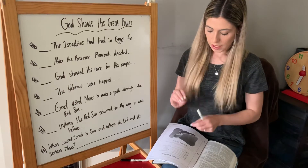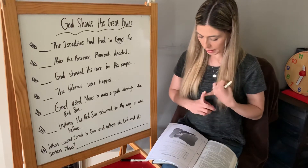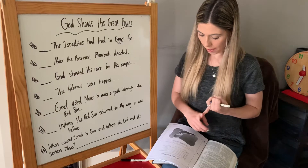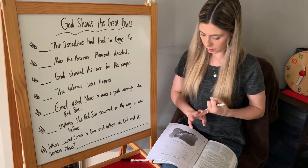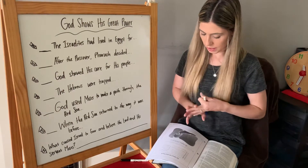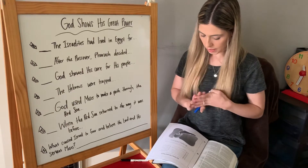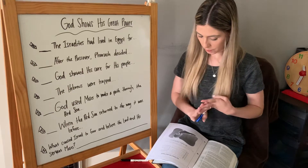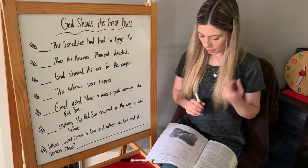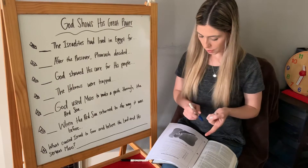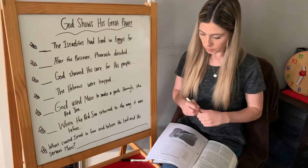The answers we have are: A, by leading them with a cloud and with fire; B, 430 years; C, by the Red Sea; D, to free God's people; E, with his rod; F, God used it to kill all of Pharaoh's army.